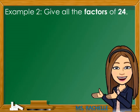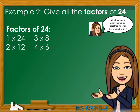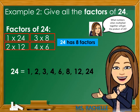Example number 2: Give all the factors of 24. Think, what numbers when multiplied together will get the product of 24? The factors of 24 are 1 times 24, 2 times 12, 3 times 8, 4 times 6. These are the only possible combinations to get the product of 24. Notice that 24 has 8 factors: 1, 2, 3, 4, 6, 8, 12, 24.